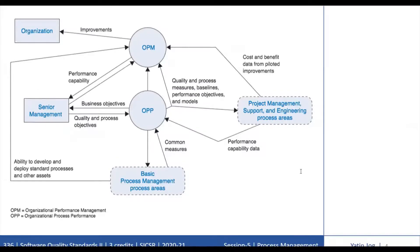The advanced process management areas provide the organization with an improved capability to achieve its quantitative objectives for quality and process performance. This diagram provides a bird's eye view of the interactions among the advanced process management process areas with other process area categories. Each of the advanced process management process areas depends on the ability to develop and deploy the processes and supporting assets, which the basic process management process areas provide. The Organizational Process Performance process area, OPP, derives quantitative objectives for quality and process performance from the organization's business objectives. The organization provides projects and support groups with common measures, process performance baselines, and process performance models.